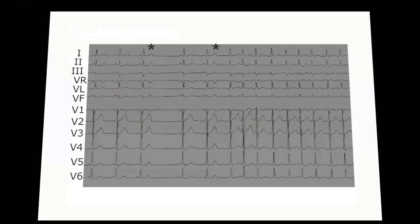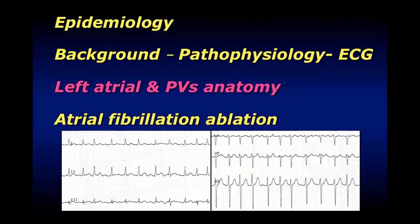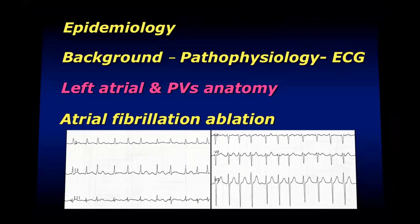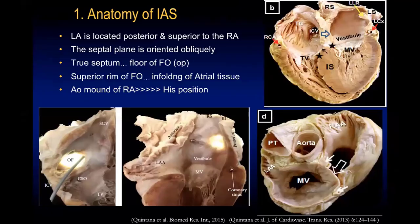Before talking about atrial fibrillation ablation, if you are entering the field of AF ablation, every electrophysiologist must know the anatomy of the left atrium and pulmonary veins very well in order to end up with a successful and uncomplicated procedure. The first and most important part of this anatomy is the interatrial septum, because this is the window into the left atrium — the door through which we gain access. Knowing the anatomy of the interatrial septum very well allows you to perform a transseptal puncture that is successful and free of complications.